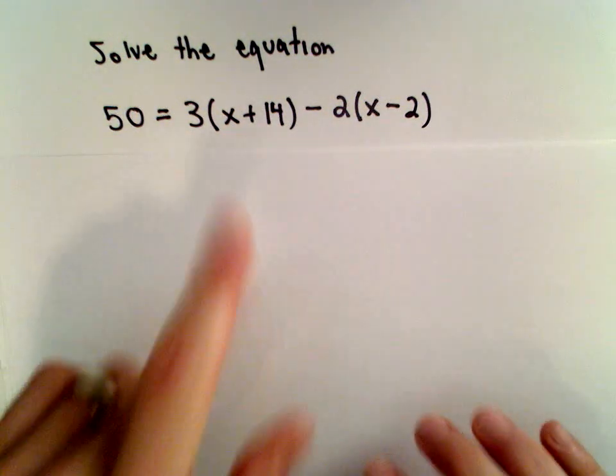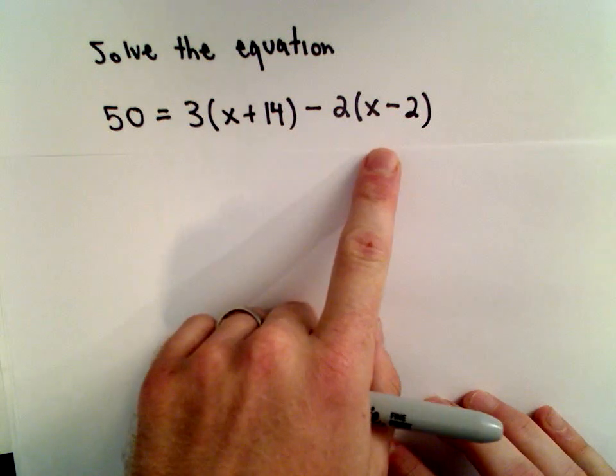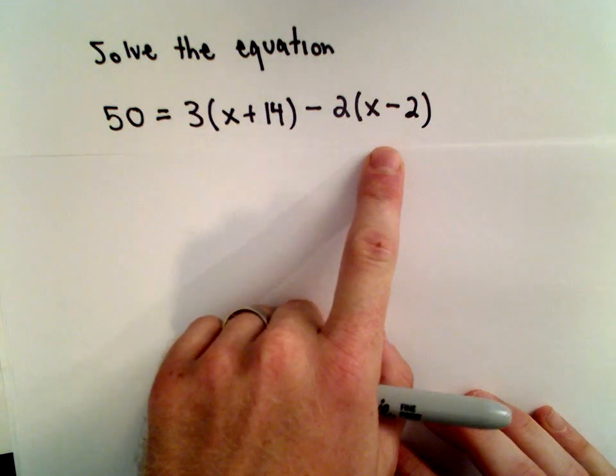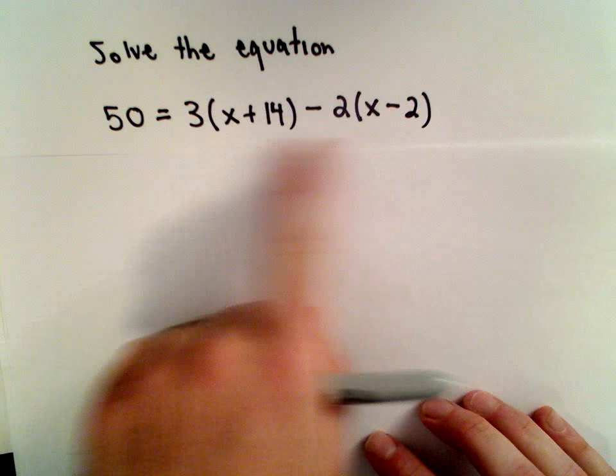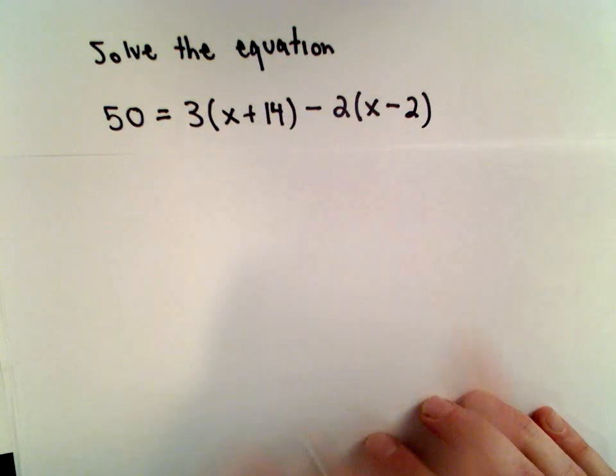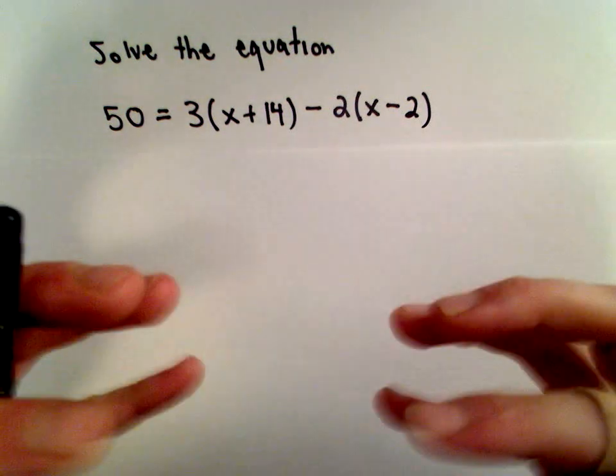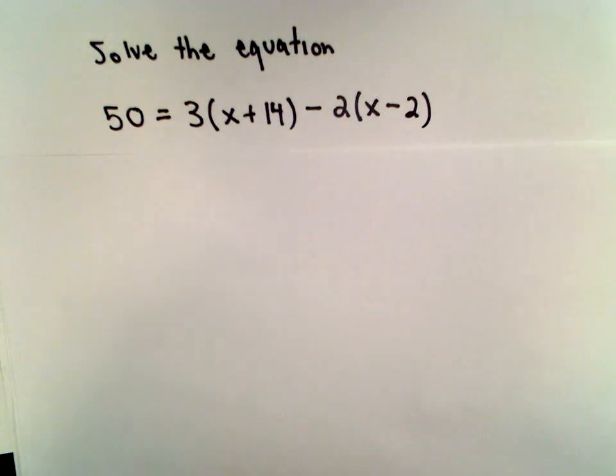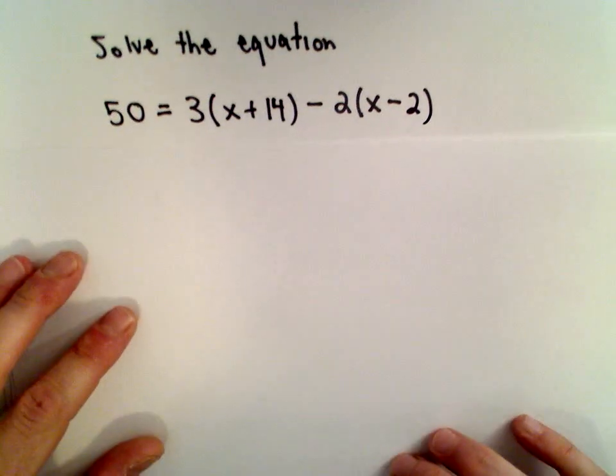So to get started, what I'm going to do is I want to get rid of the parentheses on the right-hand side of the equation. And the idea is if I have the parentheses removed, I can start combining like terms, and that will help start condensing the problem. So I'm going to use the distributive property.